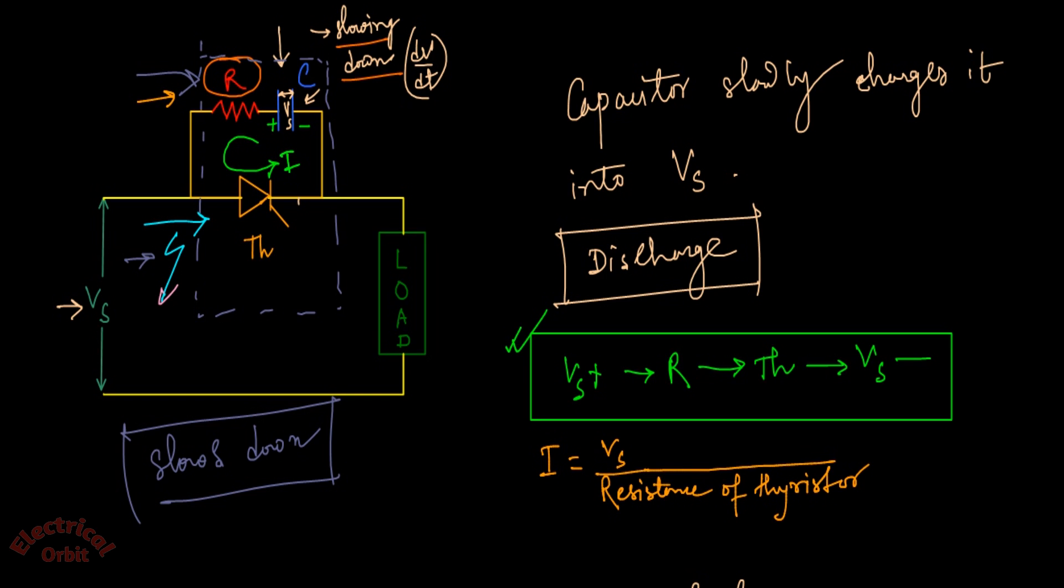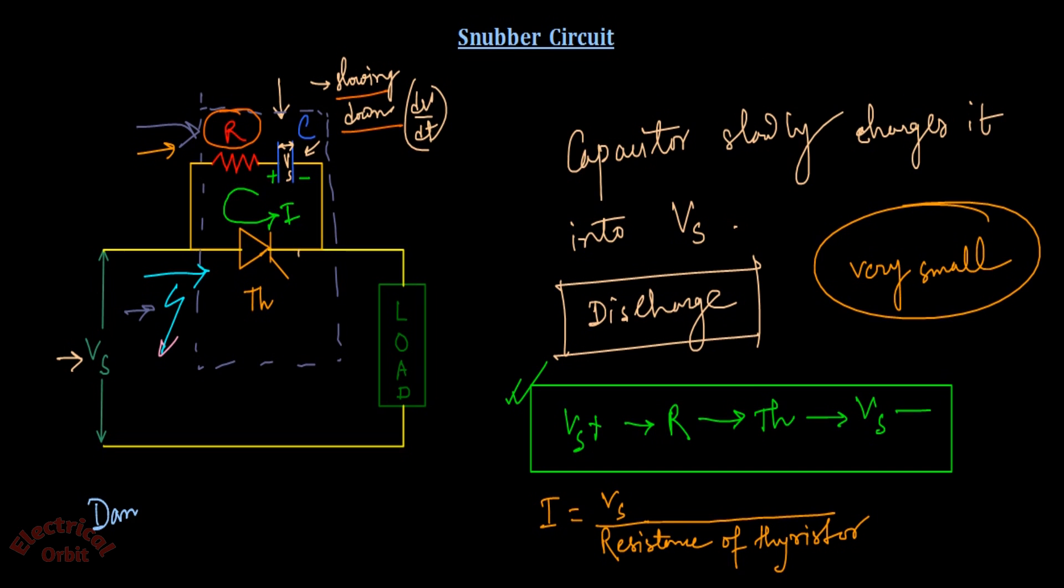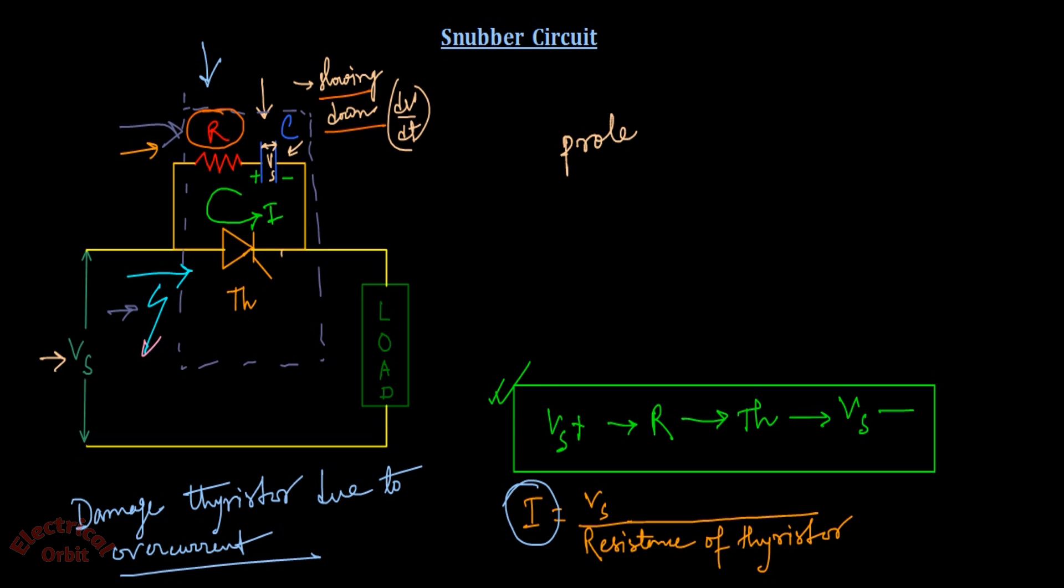When we have not applied any resistance R to the circuit, we know the value of the resistance of the thyristor in forward bias is very small. Now what does it mean? It means it can damage the thyristor due to overcurrent. So to reduce the value of this I, we are employing or connecting a series resistance along with the capacitor. So the purpose of the resistance is to protect the thyristor from the aftershock.